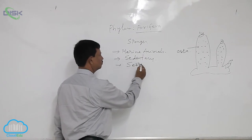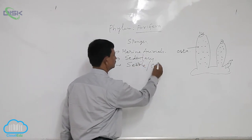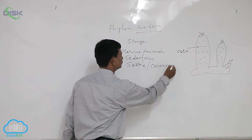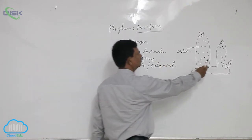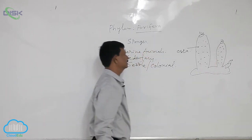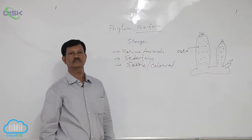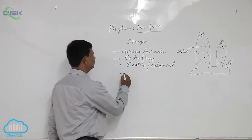They are sessile and colonial forms. Mostly they are colonial forms. You can see here there are more than two or three present. They look like plants.